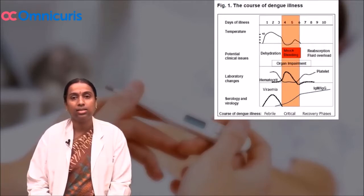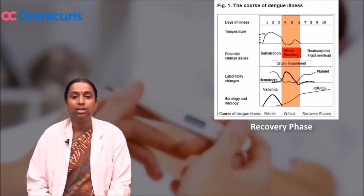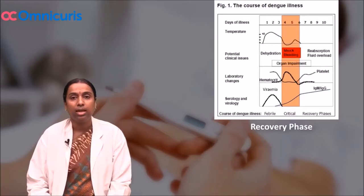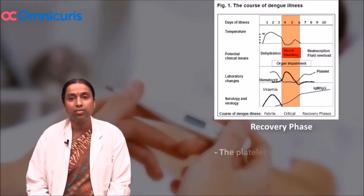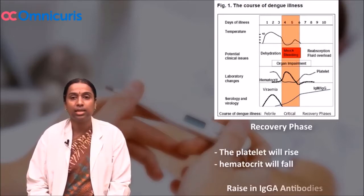Following the critical phase, the child moves on into the recovery phase. During the recovery phase, whatever fluid has leaked into the third space will get reabsorbed into the vascular compartment, which will lead to fluid overload. The platelet count will rise and the hematocrit will fall. There will also be a rising titer of IgG antibodies during this phase.